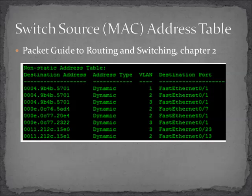Switches are a lot of times the center of our network — routers are on the edge, and switches are in the middle, forwarding traffic between all of our connected nodes. This is an example of a switch source address table, or a MAC address table. You can see here we've got a mapping between MAC addresses and the port that they're connected to, and this is how the switch figures out what it's supposed to do with frames.